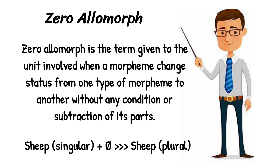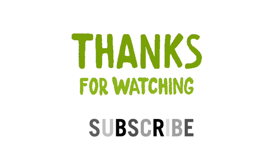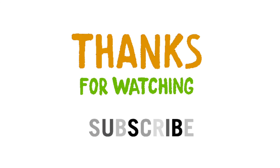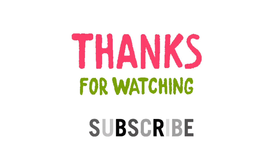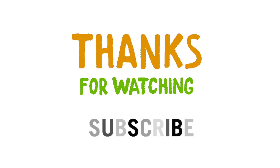With 'sheep', it depends upon the function the word is performing in the sentence. We identify it through subject-verb agreement: if it takes a plural verb, it will be a plural noun; if it takes a singular verb, it will be a singular noun. Thanks for watching — subscribe to the channel and comment the topic you want me to make a video on. Hit the bell icon so that you get updates on the videos.